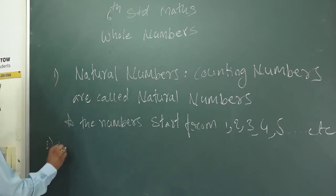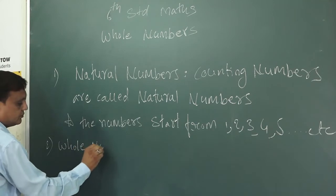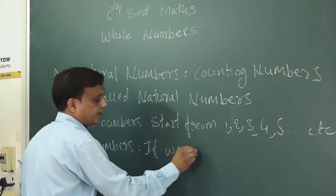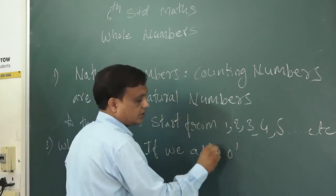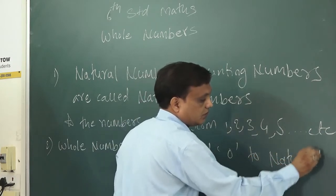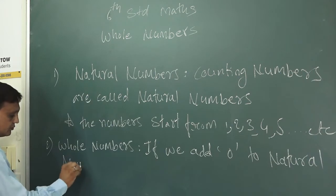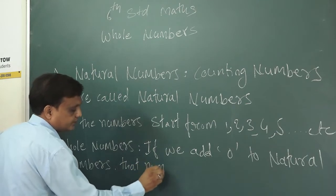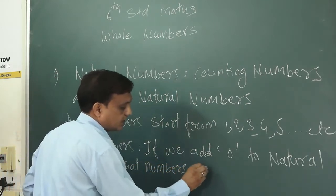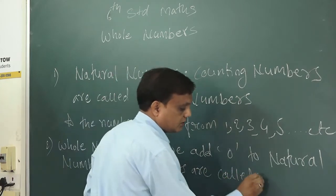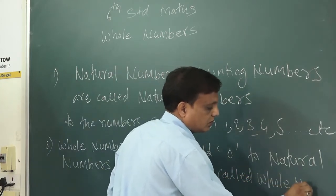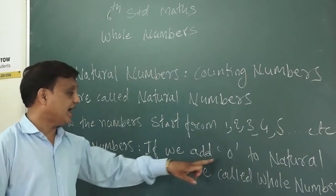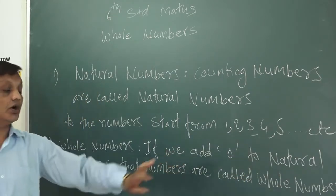The definition of whole number: if we add 0 to the natural numbers, those numbers are called whole numbers. So this is the definition of whole numbers.